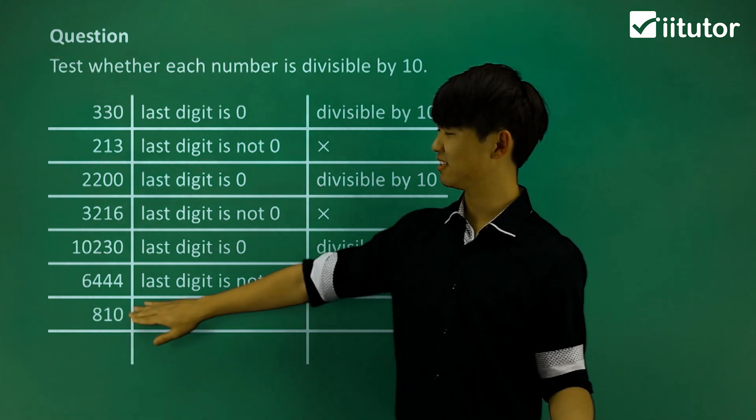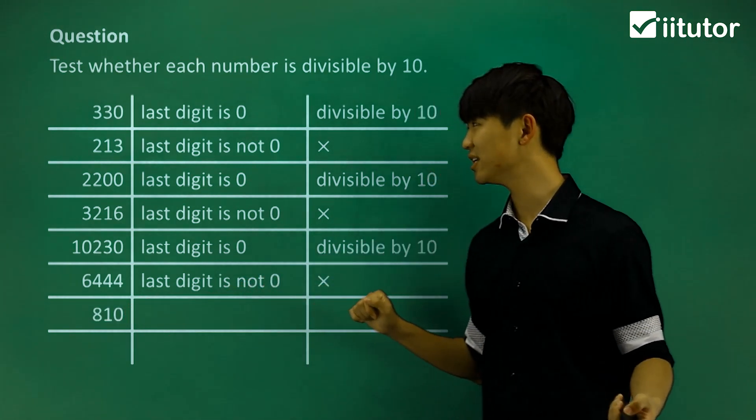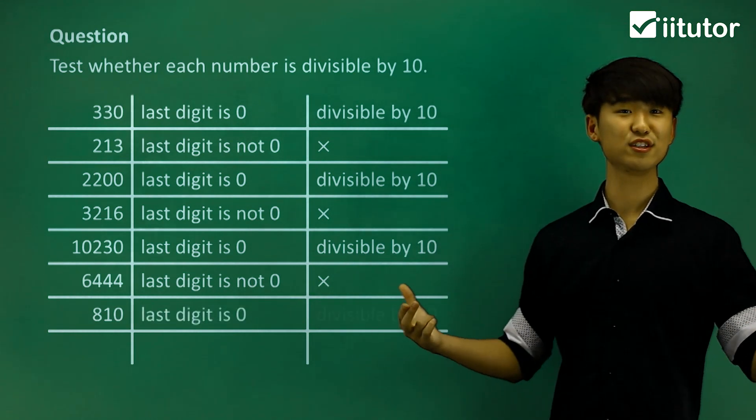810, you can see last digit is 0, so this one has a last digit of 0, so it's divisible by 10.